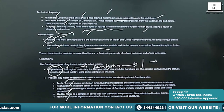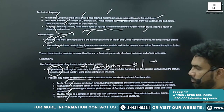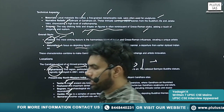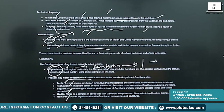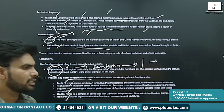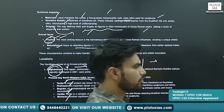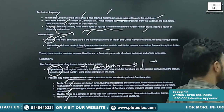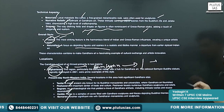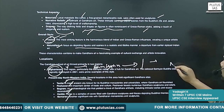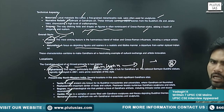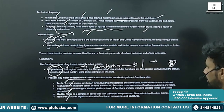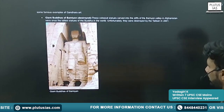They have all been destroyed, because in Islam, idolatry has been prohibited. Because of that, they destroyed the Buddhas. But still, you will find a lot of remnants of Gandhara school of architecture there.